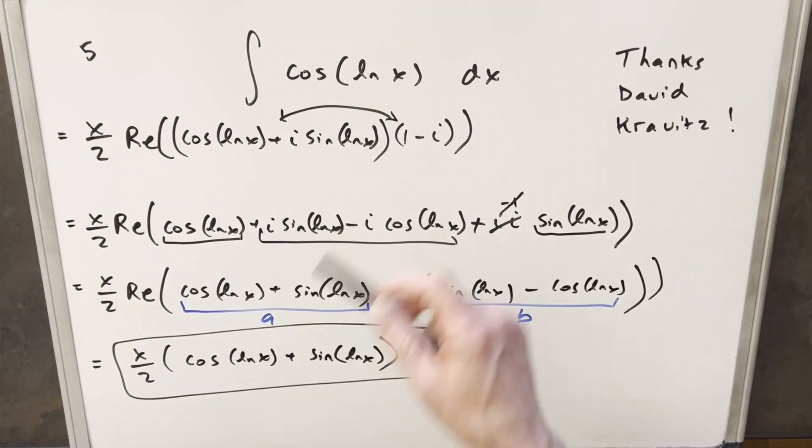Okay, there you have it. Integrating cosine ln x with the complex method. Thanks David for the suggestion. And thanks everyone for watching. Have a good day.